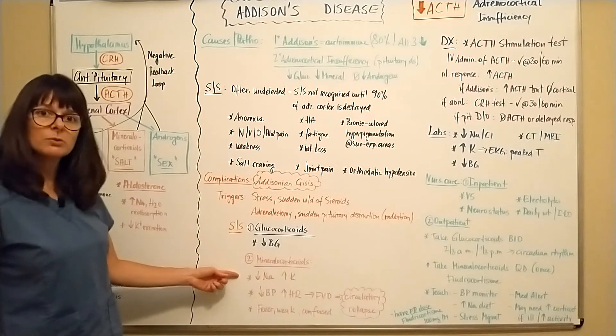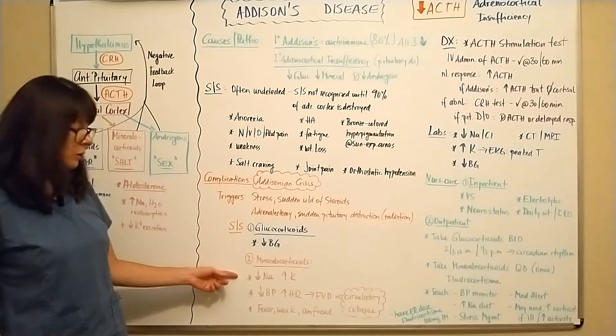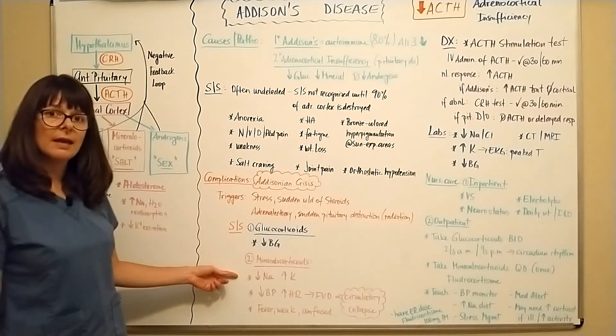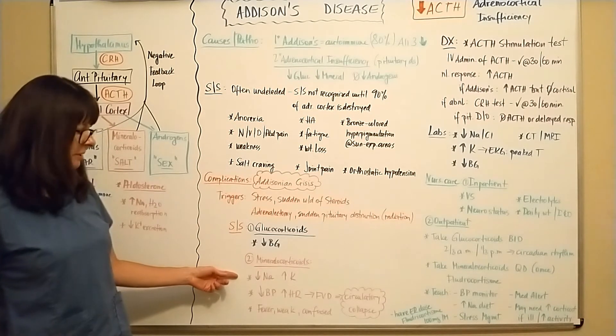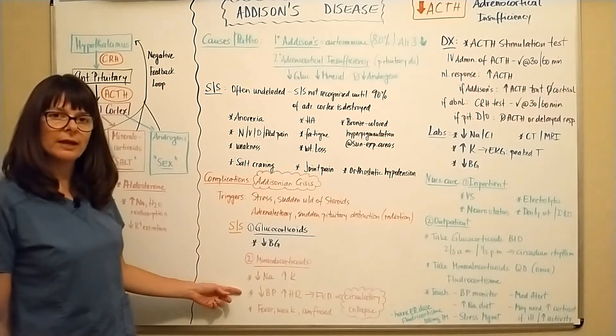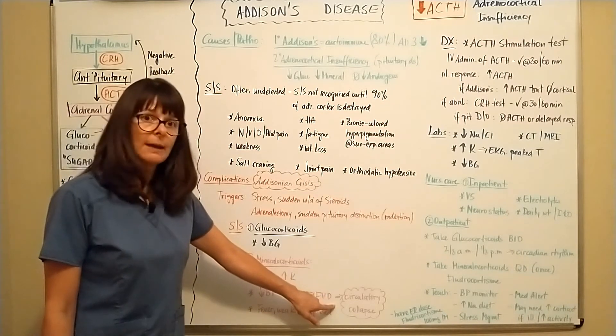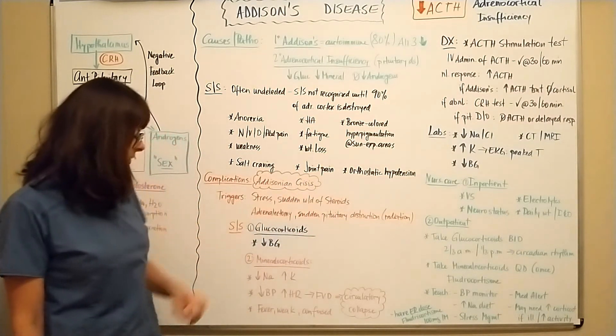If we can't reabsorb the sodium, we're also going to excrete more water, which will make the patient weak and cause fluid volume deficit or dehydration, which is evident by low blood pressure and increased heart rate, and can lead to circulatory collapse. Hence, it's called an Addisonian crisis.